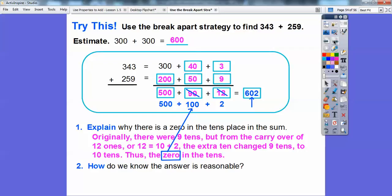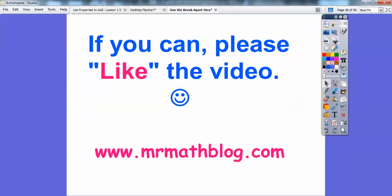How do we know that the answer is reasonable? Look at this 602. It was close to the 600 right there, so it was really close to our original estimate. All right, I hope that makes sense. If you can, would you click like on the video? Thank you. Take care.